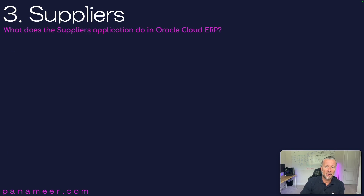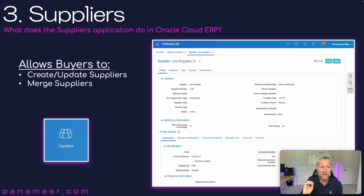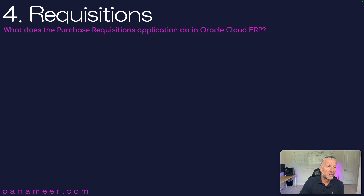Slide three: what does the Suppliers application do in Oracle Cloud ERP? This application allows buyers to create and update suppliers and to merge suppliers. As a hint, you can also do this for sub-consultants, so you don't need something like Cognibox. There's another video coming on that as well.